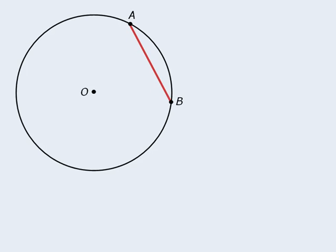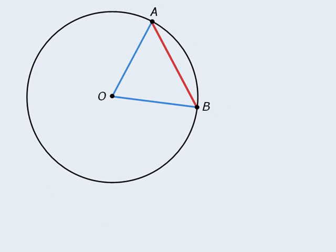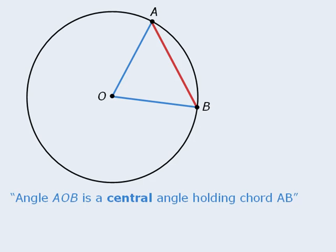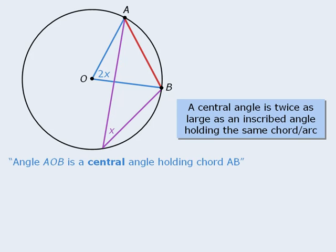For the next property, we must introduce another definition. An angle that has its vertex at the center of a circle is called a central angle. So here, angle AOB is a central angle holding chord AB. Now here comes the property. If we have an inscribed angle holding a chord, and that angle is x, then the central angle holding the same chord will be 2x. To summarize this, we can say that a central angle is twice as large as an inscribed angle holding the same chord or arc.